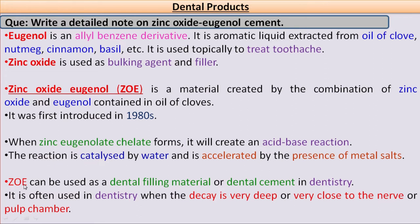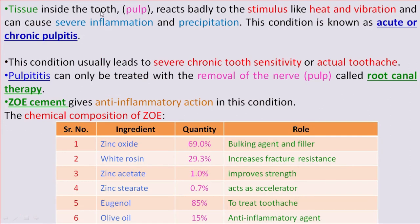Zinc Oxide Eugenol cement can be used as a dental filling material or dental cement in dentistry. It is often used when tooth decay is very deep or very close to the nerve or pulp chamber. The tissue inside the tooth, known as the pulp, will react badly to stimuli like heat and vibration, causing severe inflammation and precipitation reaction.